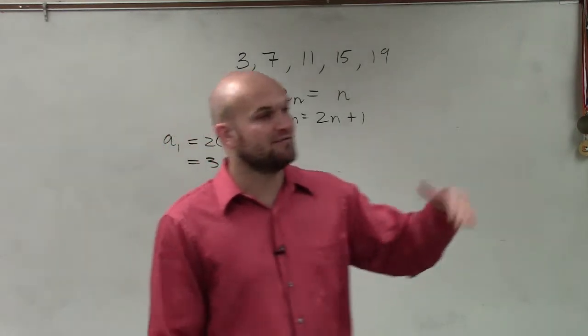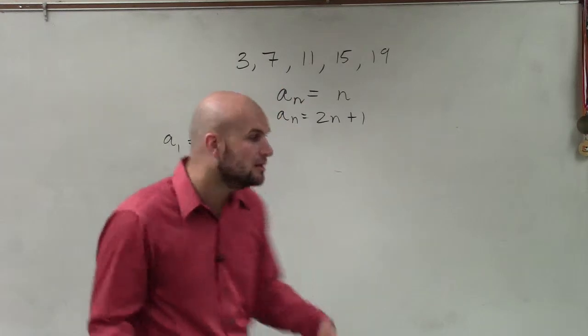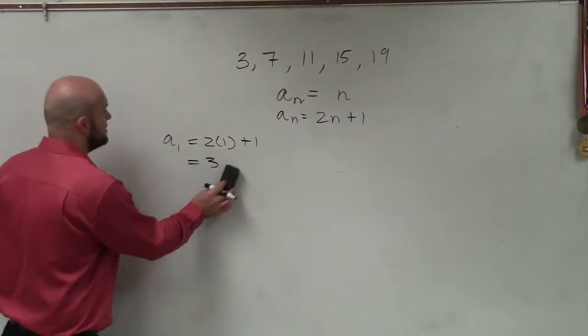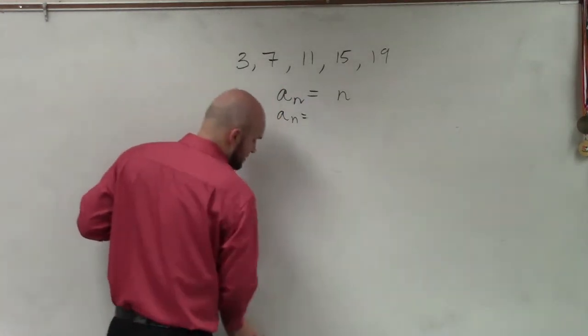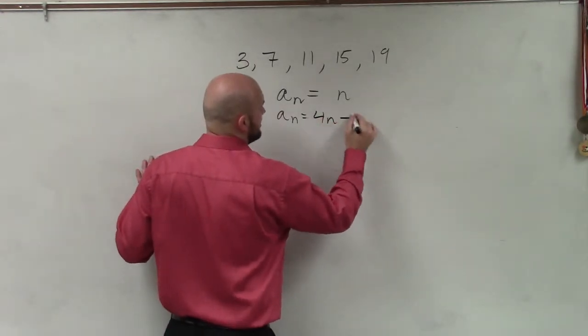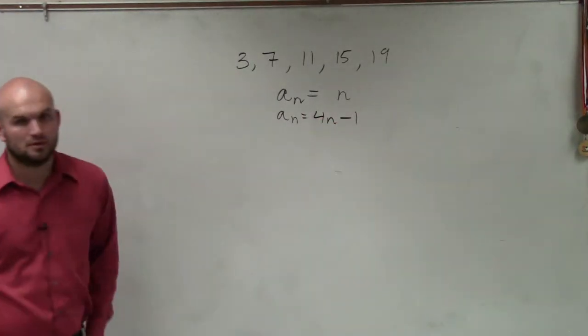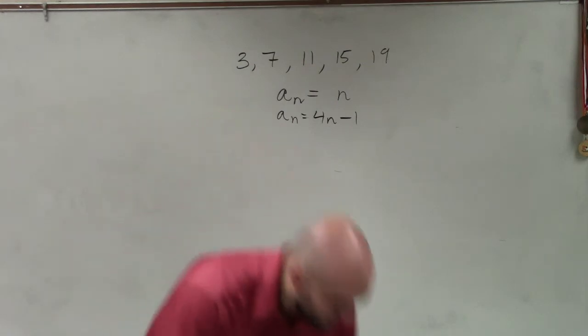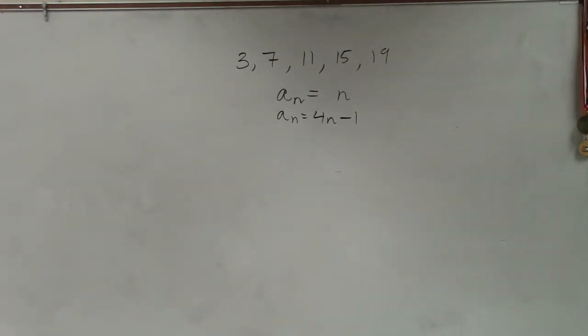So now I can look at what about if I multiply and subtract? Well, one example I could do here. What about I try 4n minus 1? All right? And what we're doing, again, is just you're looking at the product.